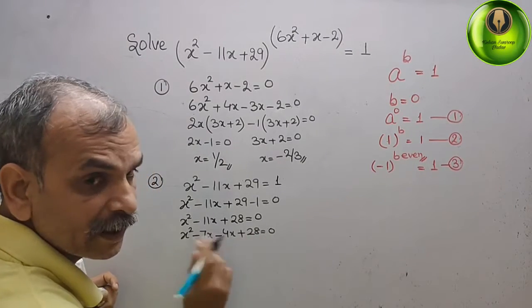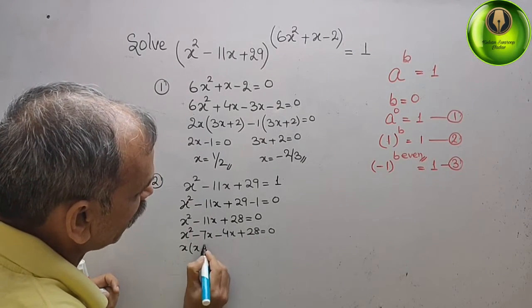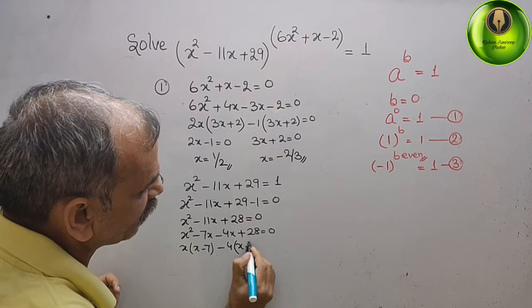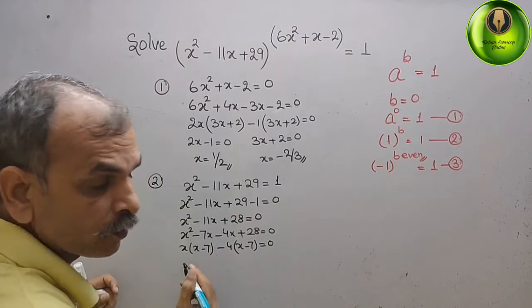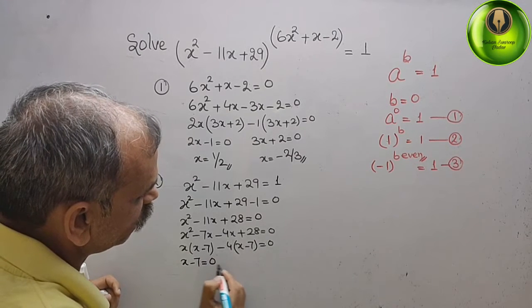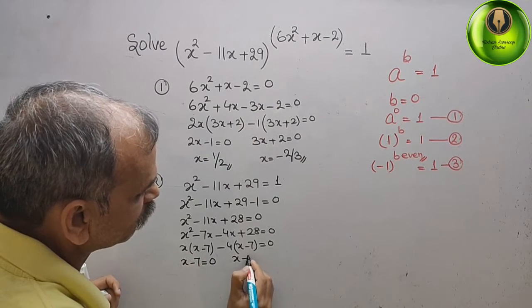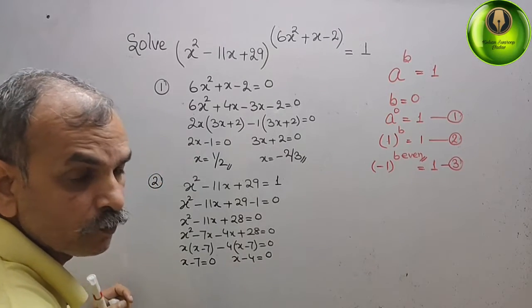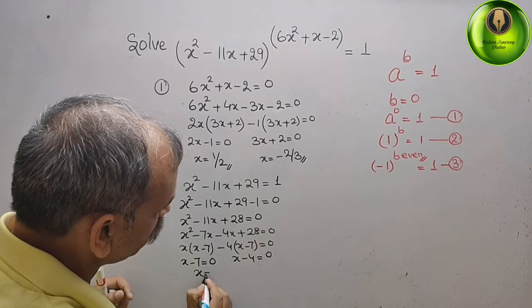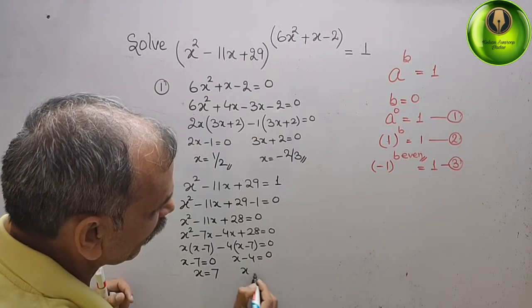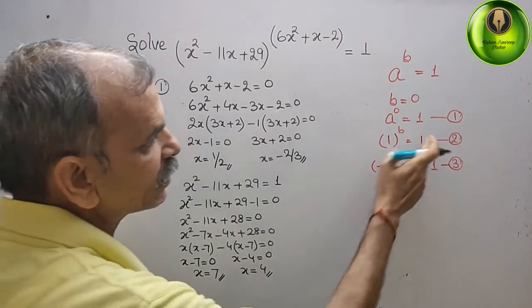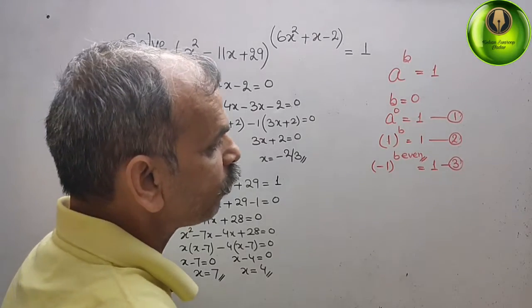Factoring: x(x - 7) - 4(x - 7) = 0, giving (x - 7)(x - 4) = 0. Therefore x = 7 or x = 4. These are the two values from the second case.